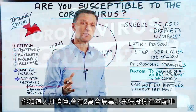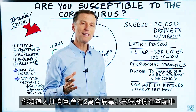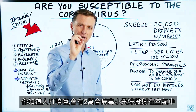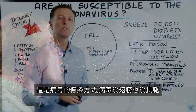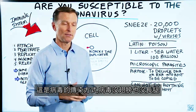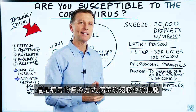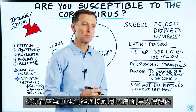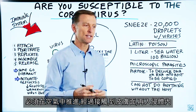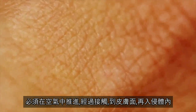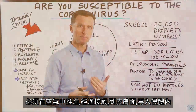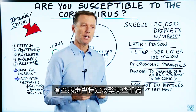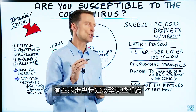Did you realize that when someone sneezes, about 20,000 little droplets containing viruses are projected through the air? That is the mode of transportation for a virus. A virus does not have wings, it doesn't have legs — it has to be propelled in the air, contacted, put on your body's surface, and somehow invade the body. Certain viruses have targets for certain tissues.